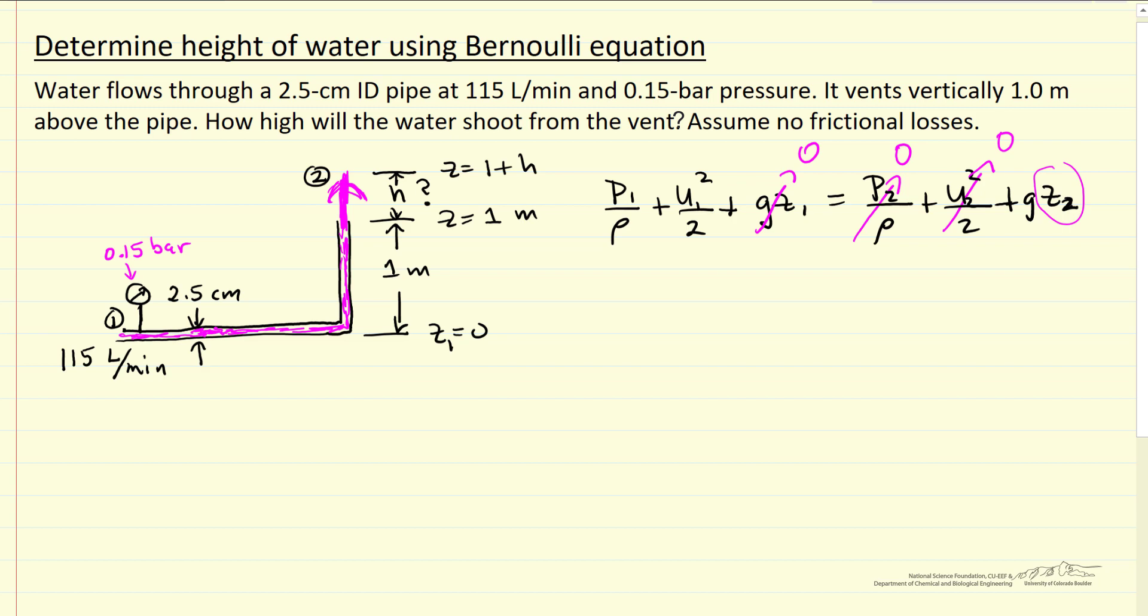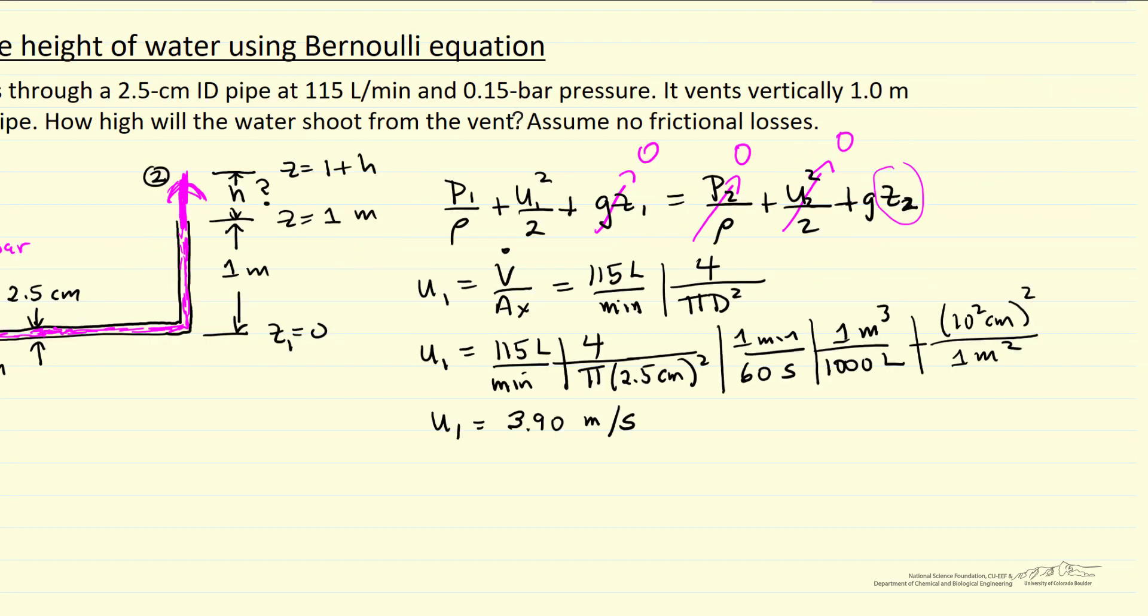So let's look at the velocity u one, and velocity would be the volumetric flow rate, which we're given, over the cross sectional area of the pipe. So volumetric flow rate, 115 liters per minute, and the cross sectional area, pi d squared over four, so I'll put the four up here, so it makes it easier to do the calculation. And now we can substitute in the values. So what I've done here, substitute in the diameter of the pipe, convert it to seconds, convert it to liters to cubic meters, and then convert it to square centimeters here to square meters, so that we end up with units of meters per second as we go through and cancel out the units. And by arranging this way it's easy to see what's happening in terms of units.